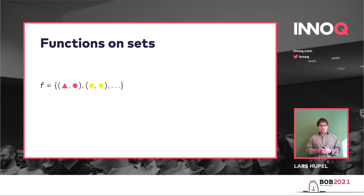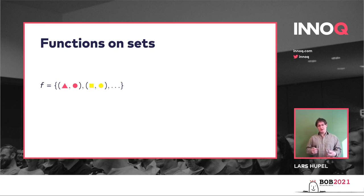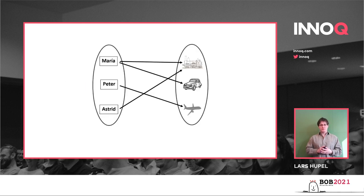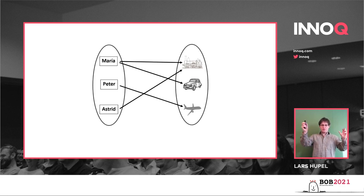What if we want to map one source element to multiple target elements — what if we don't like this restriction? We can do that; it's just that then we can't call them functions anymore — we have to call them relations. Relations are sort of like generalized functions: we can do pretty much arbitrary things, mapping anything to anything else regardless of how many things we map.